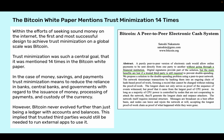The Bitcoin White Paper mentions trust minimization 14 times. Within the efforts of seeking sound money on the internet, the first and most successful design to achieve trust minimization on a global scale was Bitcoin. Trust minimization was such a central goal that it was mentioned 14 times in the Bitcoin White Paper. In the case of money, savings, and payments, trust minimization means to reduce the reliance on banks, central banks, and governments with regard to the issuance of money, processing of payments, and custody of the currency.